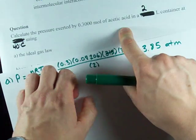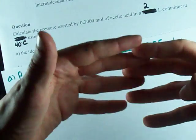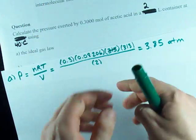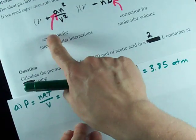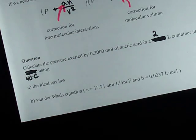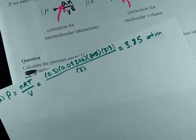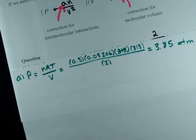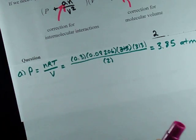Now, I chose acetic acid on purpose, because there's heavy hydrogen bonding. The A term, which accounts for intermolecular forces, is actually pretty significant. In fact, it's 17.71. So let's do this again, but with the Van der Waals equation.